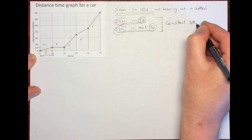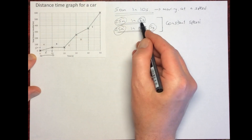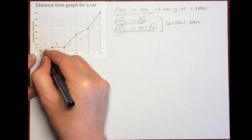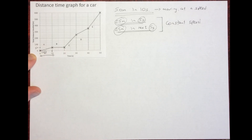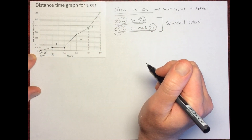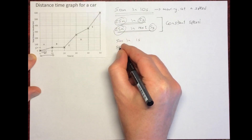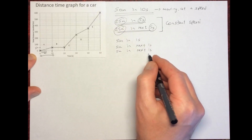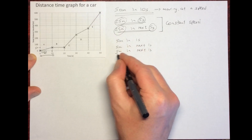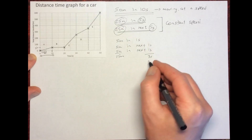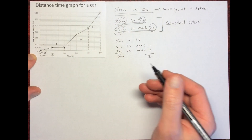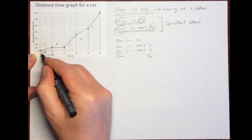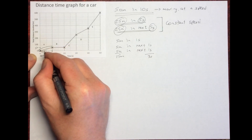If we were not traveling at a constant speed, the distance in the first five seconds would not equal the distance in the next five seconds. Breaking it down further into individual seconds, every second on this graph we move five meters. Because we travel the same distance in every period of time, we must be going at a constant speed — and we can confirm this because the graph is a straight line, not a curve.